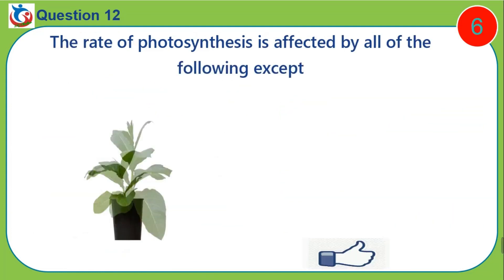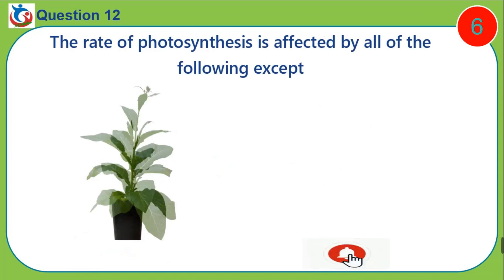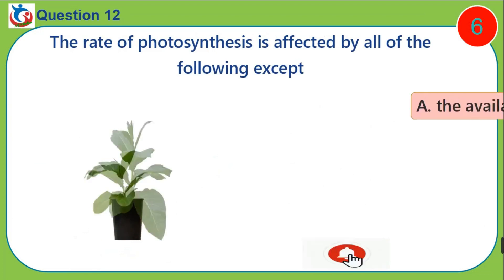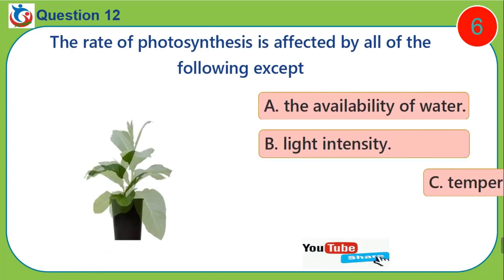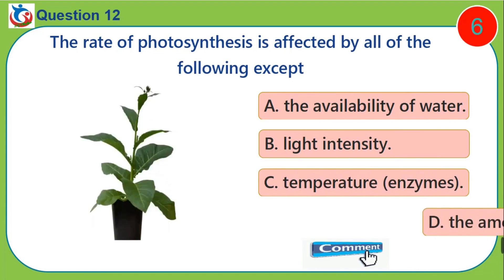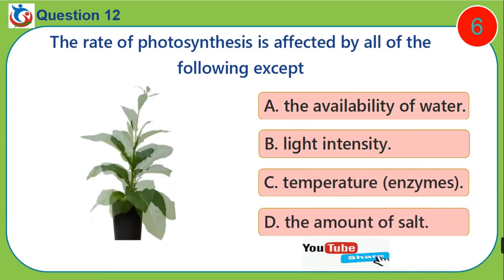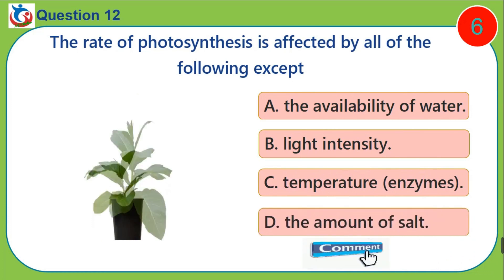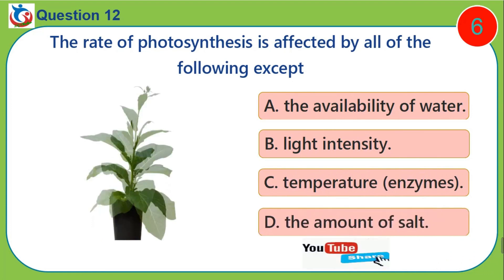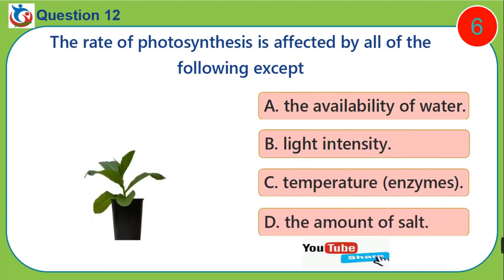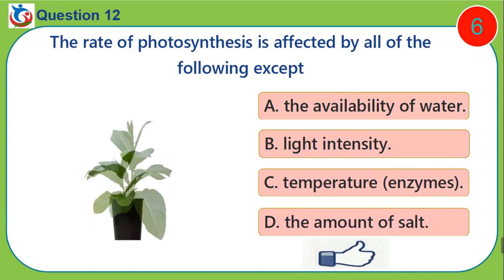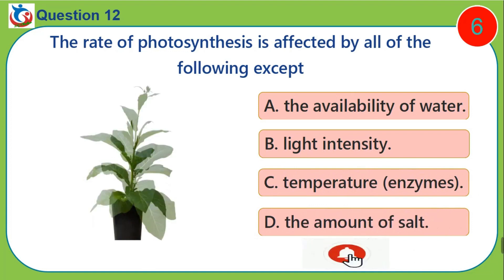Question twelve: The rate of photosynthesis is affected by all of the following except: A) the availability of water, B) light intensity, C) temperature, D) amount of salt.